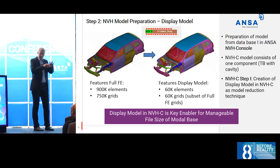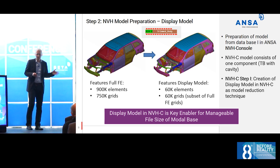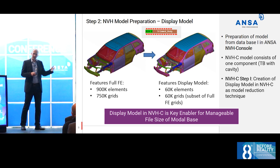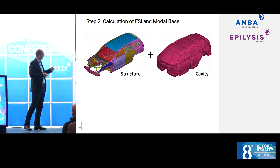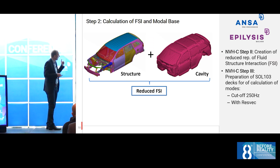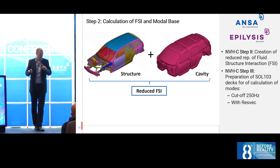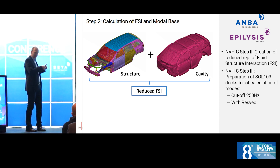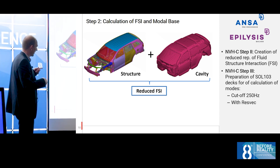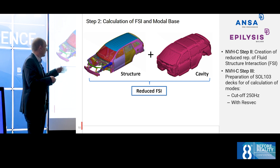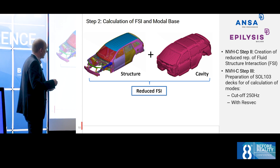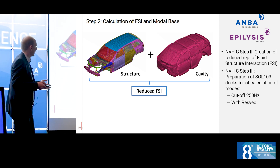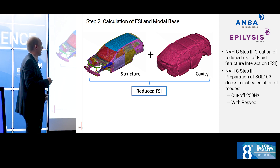We do this in MBH console, because it's easy to load a model and create a display model there. We have the tools in ANSA anyway, but MBH console makes it even easier. The next step is to take care of the coupling between structure and cavity. Because we don't have the full mesh anymore, we have to calculate the reduced fluid-structure coupling matrix. MBH console does this for you. MBH console also calculates all the mass matrices you need in order to run the modal analysis.